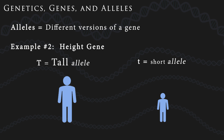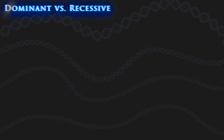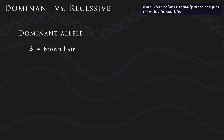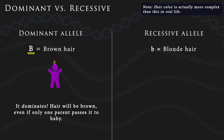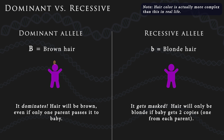In basic genetics problems, you'll often work with dominant and recessive alleles. A dominant allele is one that shows up in the trait even if there's only one copy of it. We usually represent dominant alleles with a capital letter, like capital B for brown hair. A recessive allele is one that gets masked by a dominant allele — it only shows up in your traits if you inherit two copies, one from each parent. We use a lowercase letter to represent it, like lowercase b for blonde hair.